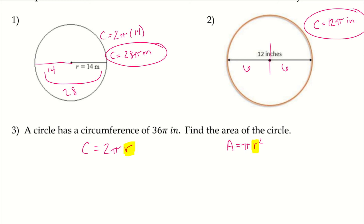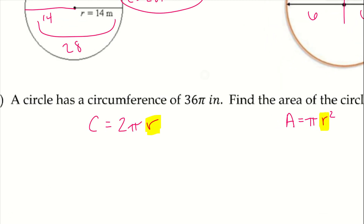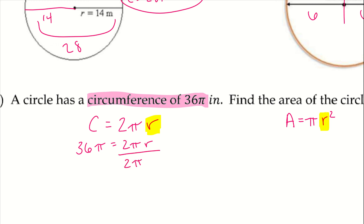Since both formulas share the radius, if I use the circumference to find the radius I can then plug it into the area formula. So 36π equals 2πr. Dividing both sides by 2π cancels the pi on the right, and 36 divided by 2 gives us a radius of 18.